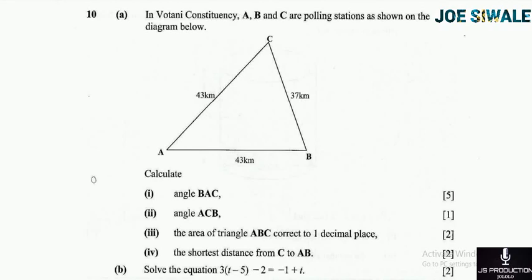Question 10a reads: In Botani constituency, A, B, and C are polling stations as shown on the diagram below. As you can see, that's the diagram — a triangle ABC where length AC is 43 kilometers, length BC is 37 kilometers, and length AB is 43 kilometers. Calculate: number one, angle BAC — 5 marks; number two, angle ACB — 1 mark; number three, the area of triangle ABC correct to one decimal place — 2 marks; number four, the shortest distance from C to AB — 2 marks. Question B reads: solve the equation 3(t − 5) − 2 = −1 + t — 2 marks.